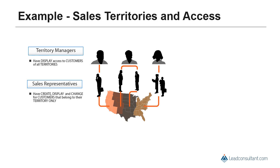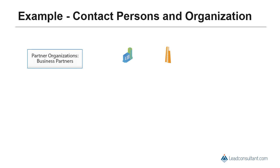For example, territory managers can display all customers regardless of territory assignments, while sales representatives can only create, display, or change customers belonging to their assigned territories. Similarly, territory managers can display all opportunity documents for their territory, while sales representatives can only create, display, and change opportunity documents belonging to their assigned territory.